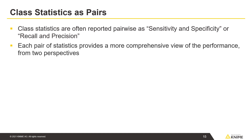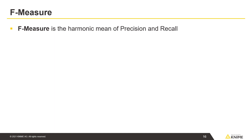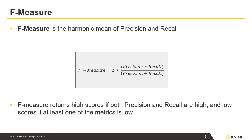Each pair of statistics provides a more comprehensive view of the performance from two perspectives. The two statistics are characterized by an inverse relationship, where increasing one often comes at the cost of reducing the other. We can also combine Precision and Recall into a statistic called F-measure. F-measure is the harmonic mean of Precision and Recall, returning high scores if both are high and low scores if at least one is low.